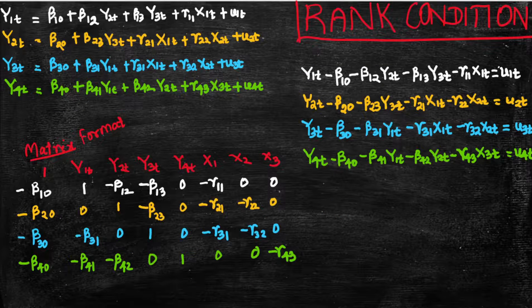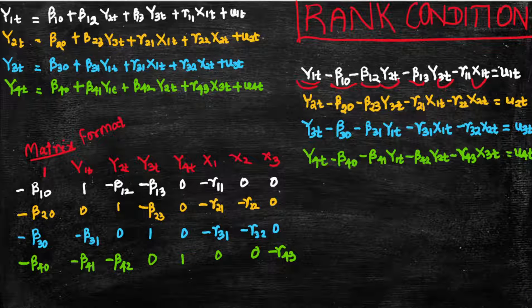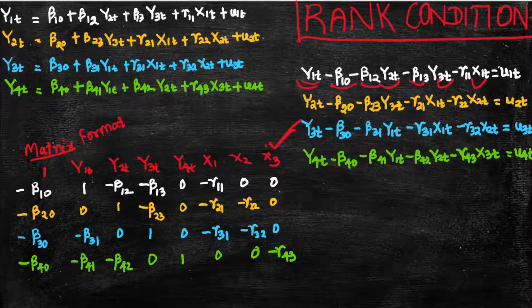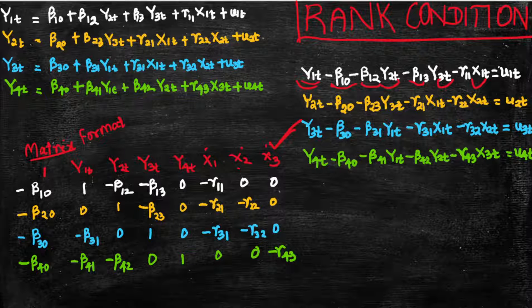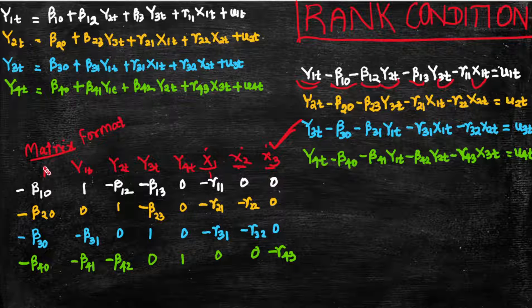In the next slide, what we are doing is taking all the variables of the equations and putting them in the first row. We are listing the variables: y1t, y2t, y3t, y4t, x1, x2. All the y variables are endogenous variables and the predetermined variables are x1, x2, x3 — three in number.